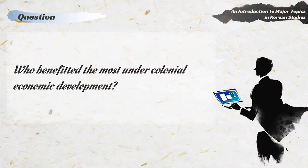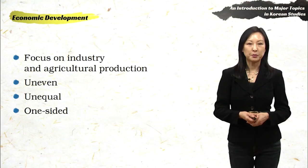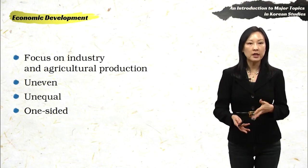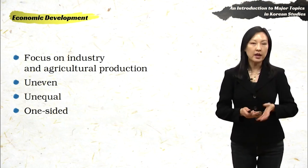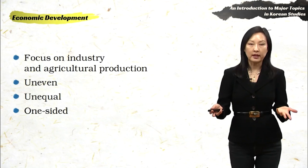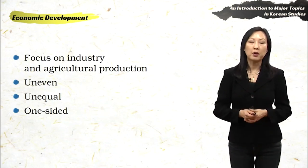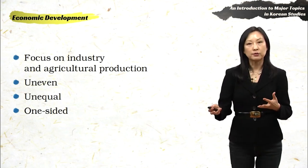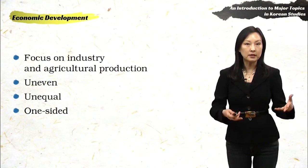Who benefited the most under colonial economic development? Focusing on economic development during the colonial period, the Japanese wanted to develop industry and agricultural production in Korea. Because the southern half of the peninsula has very arable land and is great for rice production, they wanted to increase rice production there. Since Japan didn't produce enough rice for its own population, this was one of the attractive features of colonizing Korea.